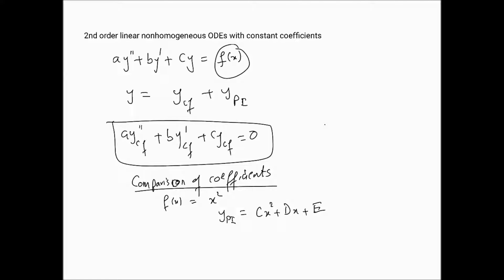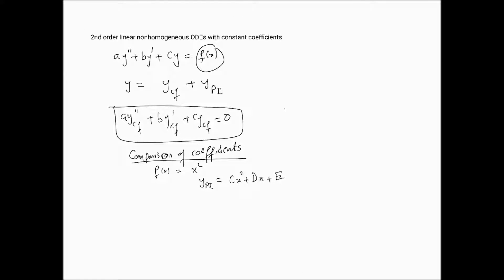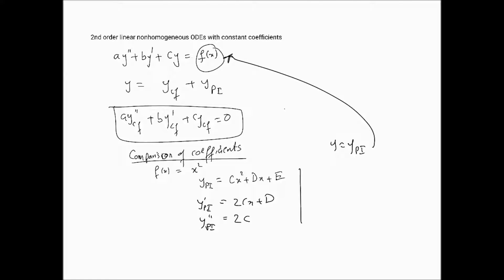When I say comparison of coefficients and forcing the solution, I mean that if we assume ypi is a solution to the actual differential equation, we compute its derivatives. So ypi' = 2Cx + D and ypi'' = 2C. We then substitute these into the original differential equation, since we're assuming ypi is a solution to it.